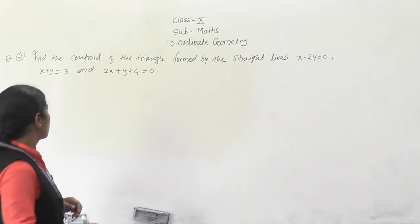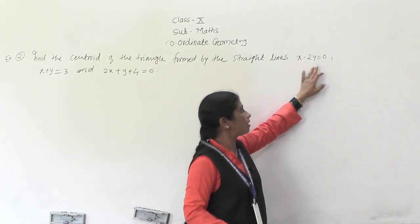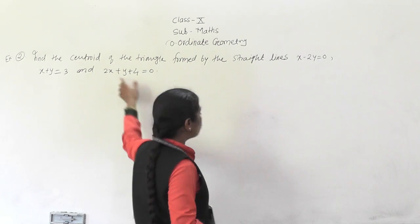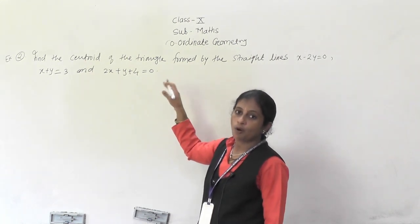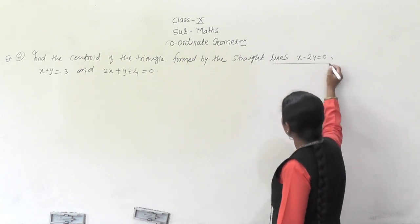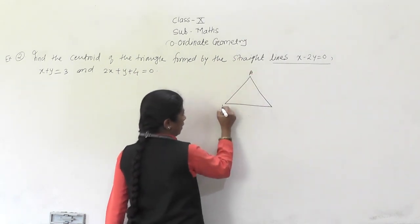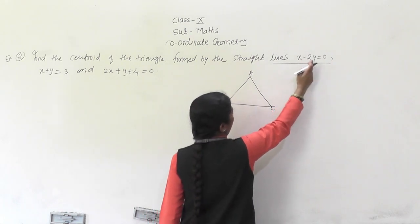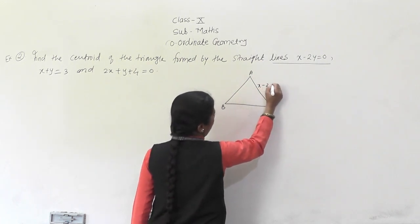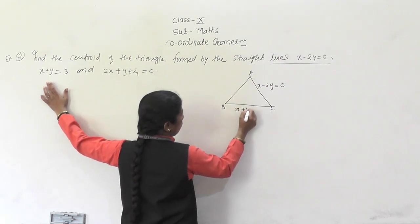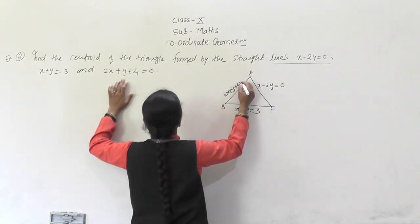Now the second example: find the centroid of the triangle formed by the straight lines x − 2y = 0, x + y = 3, and 2x + y + 4 = 0. Instead of vertices as points, here we are given lines, so we will draw triangle ABC and label the three lines.